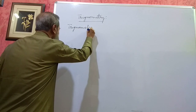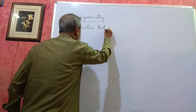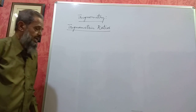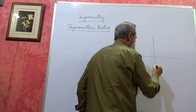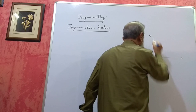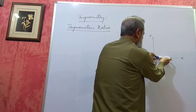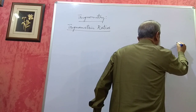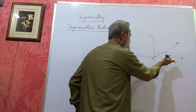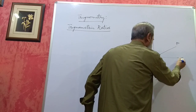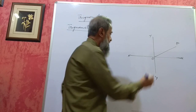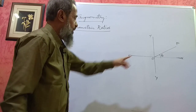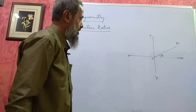Let us see what these trigonometric ratios are. Here, let us say I have a vector starting from here. I will make it trace an angle in the positive direction. I will call that as OP. This is the reference line, the zero line. From here, it has covered this much angle. We will call that angle as theta. OP is this vector, which has covered an angle of theta in the positive direction.